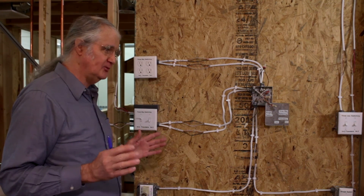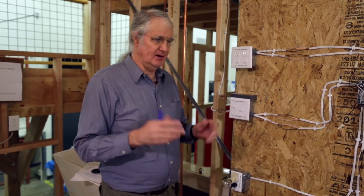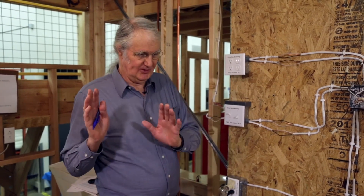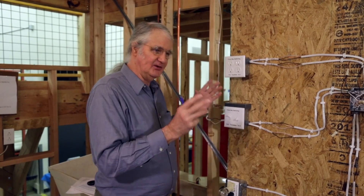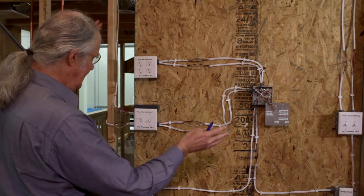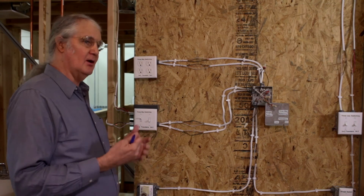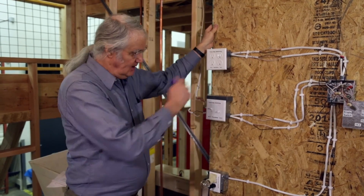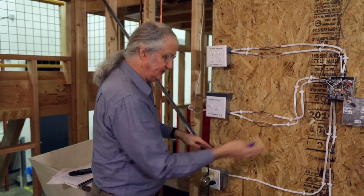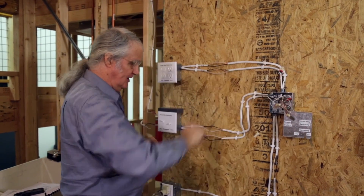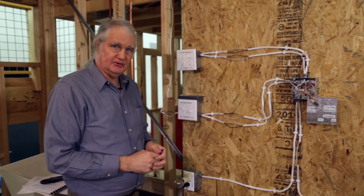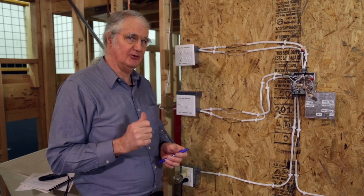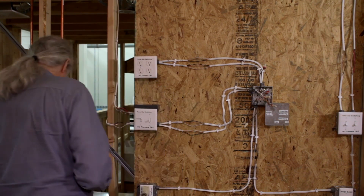Let's demonstrate this with the setup we have here. We're in the InterNACHI House of Horrors — the training house InterNACHI has created in their warehouse in Boulder, Colorado. This is the electrical room with examples of what home inspectors may find. Home inspectors can help their clients by carrying a gauss meter. One option is the Gauss Master, which is only $35. You press this button to turn it on; it's an analog meter.